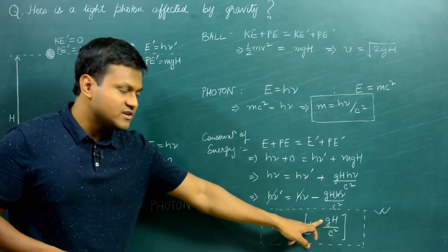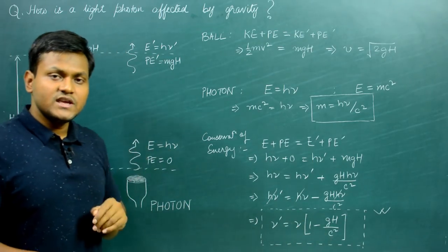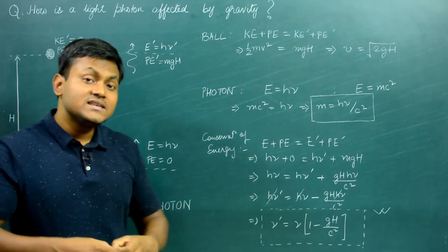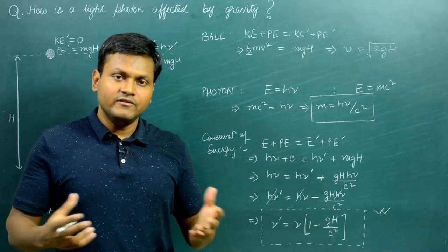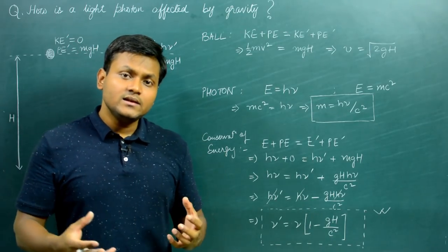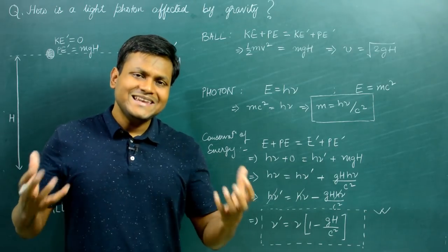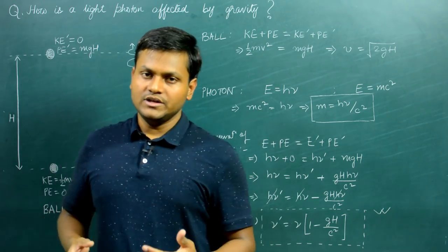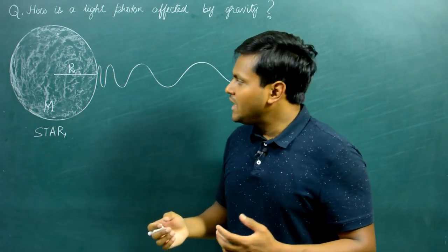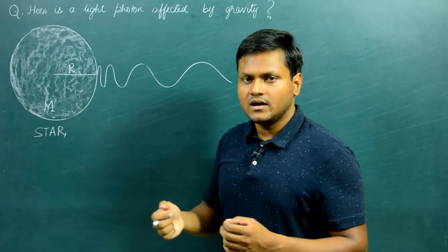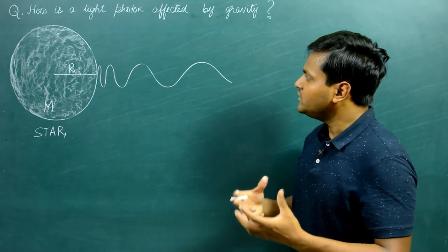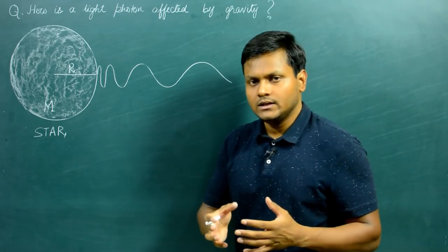In this calculation I have assumed acceleration due to gravity to be constant, because I am taking very small distances. If I want to extend this argument and imagine a case in which the photon escapes the gravitational potential of a heavenly object — a planet or a star — then what is going to be the final frequency of the photon when it completely escapes the gravitational potential of, let's suppose, a star? Let's do that calculation.